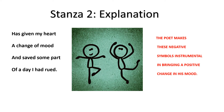Stanza 2 explanation — Has given my heart a change of mood and saved some part of a day I had rued. According to Robert Frost, the unsaid part of the poetry is its best part. Though he does not say anything directly, it is evident that he is referring to superstitious beliefs in various societies which people blindly follow — for instance, if a cat crosses your path, if someone sneezes while you are leaving the house, etc. In the second stanza, the poet says that because of the snow falling on him, he finds himself partially relieved. His day just got a whole lot better.